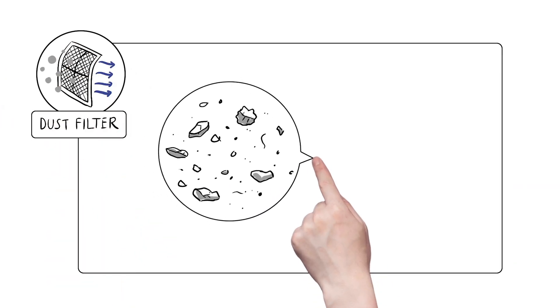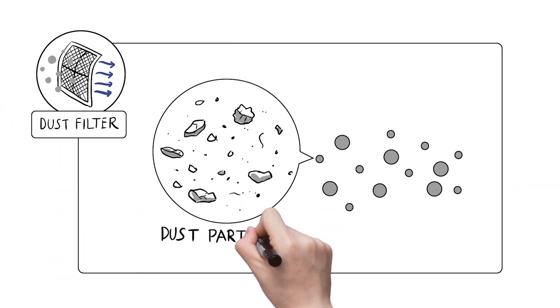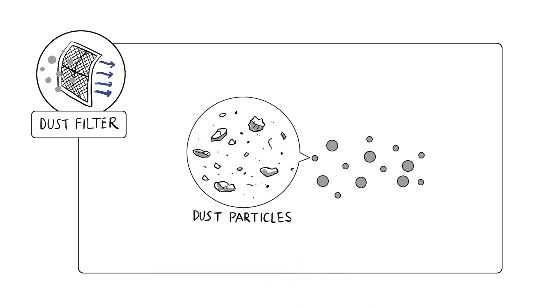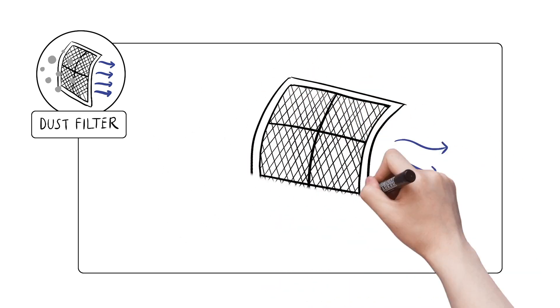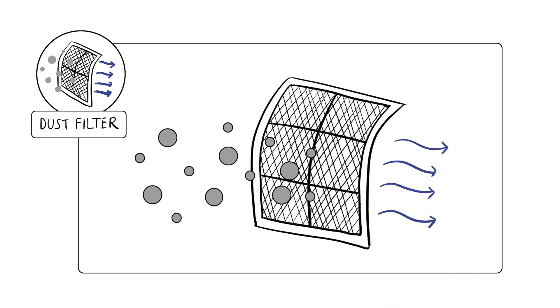1. Dust filters. Dust filters trap small harmful dust particles in the filter by forcing air through a fine mesh, filtering the air as it goes through the air conditioning unit.